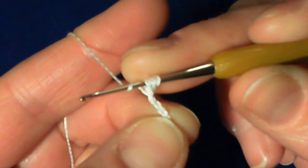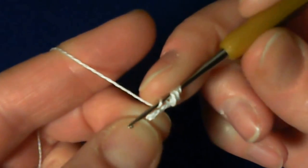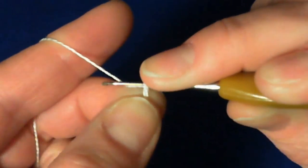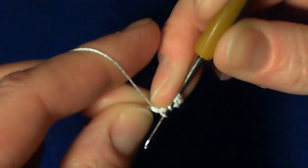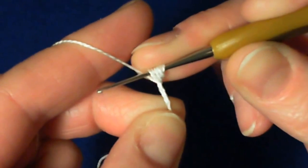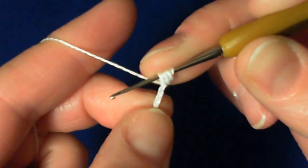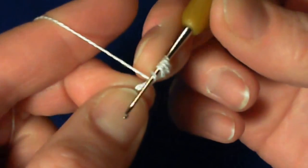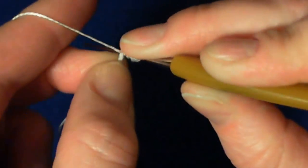Again, yarn over, hook under the chain, grab the thread and bring it out. So we did it 3 times. You need to make it 8 times, so 5 more times. I'm doing it slowly so you can follow me.